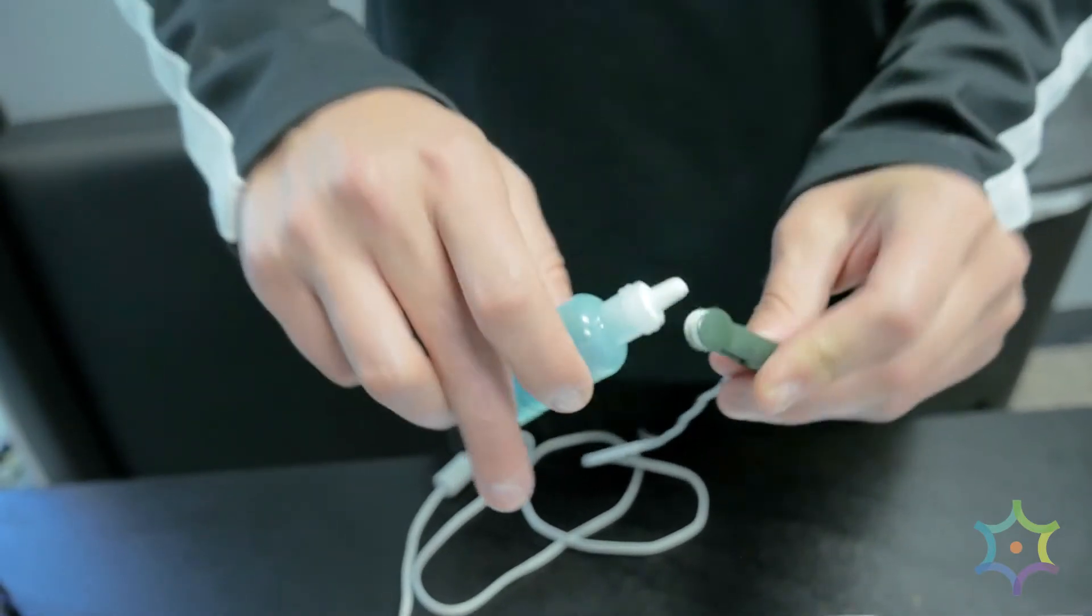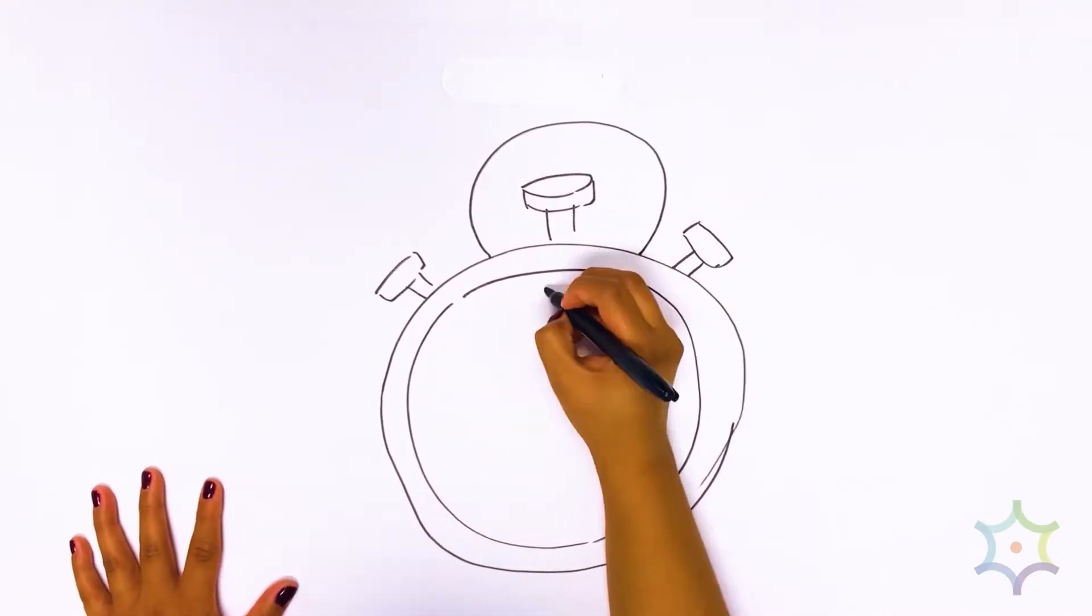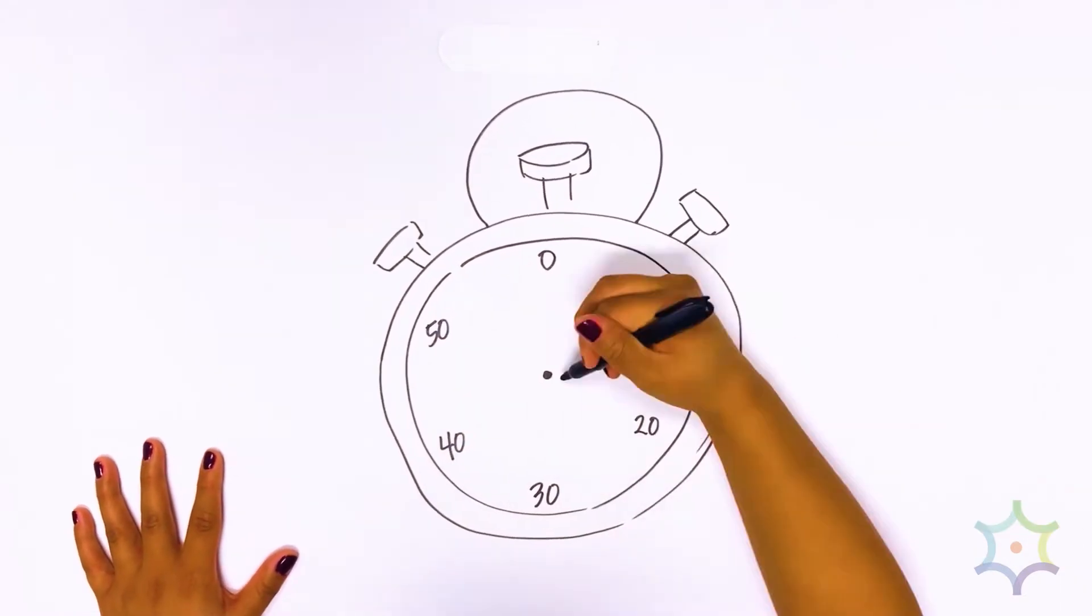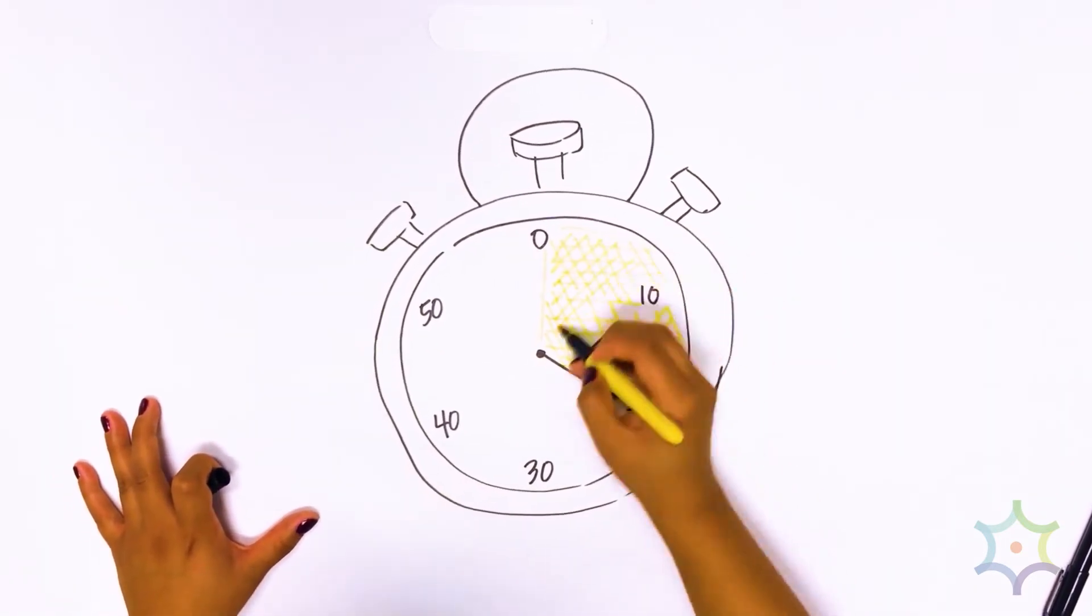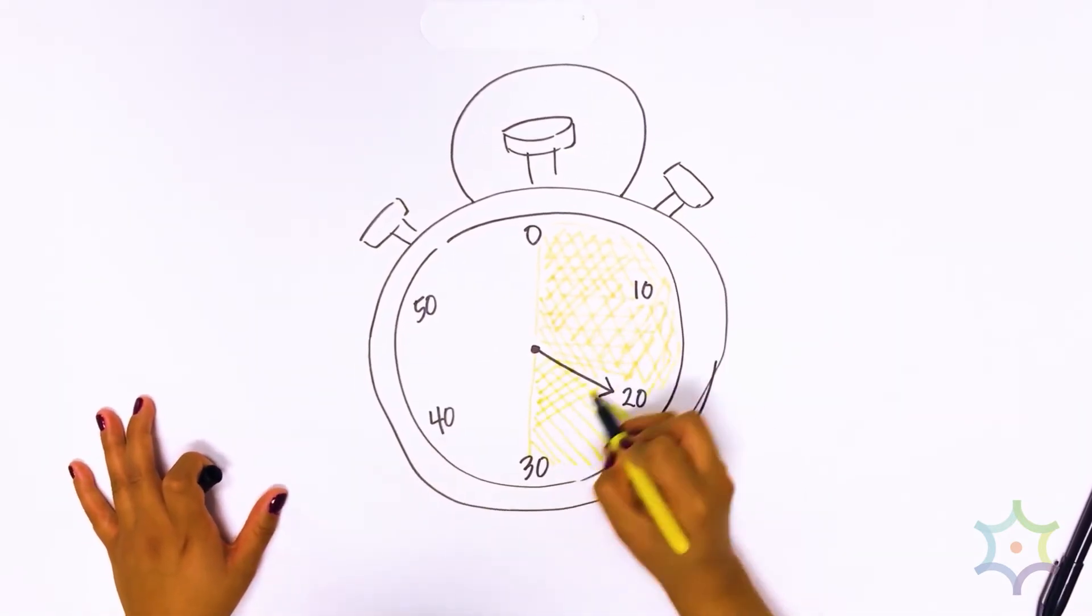At first, we will put the ear clips on your ears for just a few minutes, and then we'll check in with you to see how you're feeling. Eventually, the ear clips will stay on your ears for 20 minutes, but sometimes longer, depending on the person.